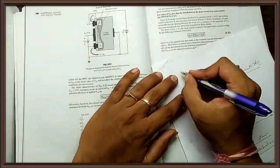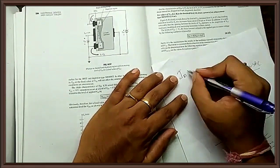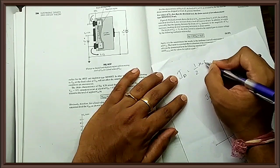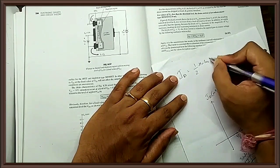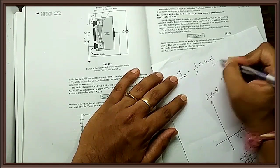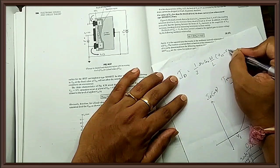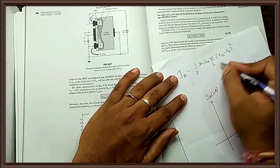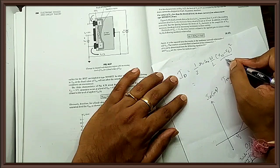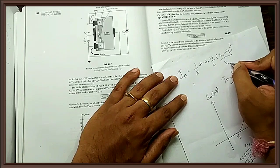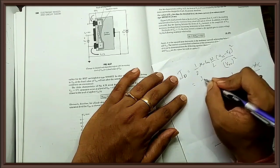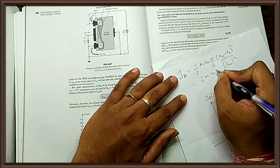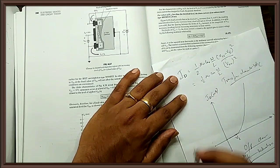The drain current equation is: ID = (1/2) · μN · COX · (W/L) · (VGS − VT)². Since VGS minus VT is VOV, this can also be written as ID = (1/2) · μN · COX · (W/L) · VOV².